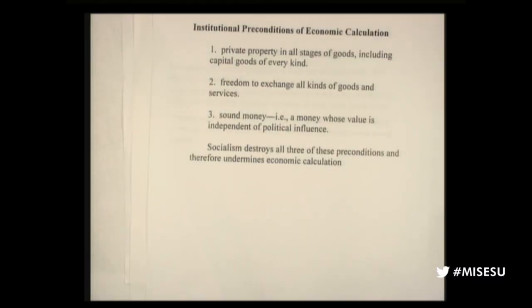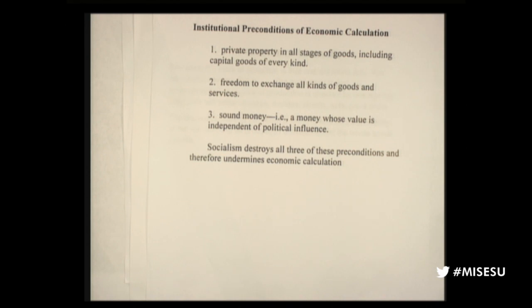With that, Mises destroyed the argument that socialism could be in any way efficient. Mises pointed out the preconditions of economic calculation: you have to have private property in all stages of goods, not just consumer goods. Socialism might allow ownership of your own clothing or a small garden, but everything else would be collectively owned. Secondly, you need the freedom to exchange all kinds of goods and services — not just vegetables or clothing, but steel mills, software programs, and so on. Every single factor of production must be exchanged and therefore have a price.